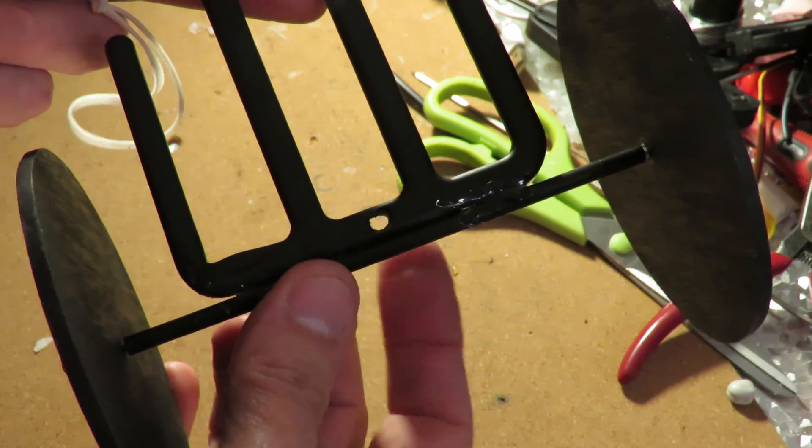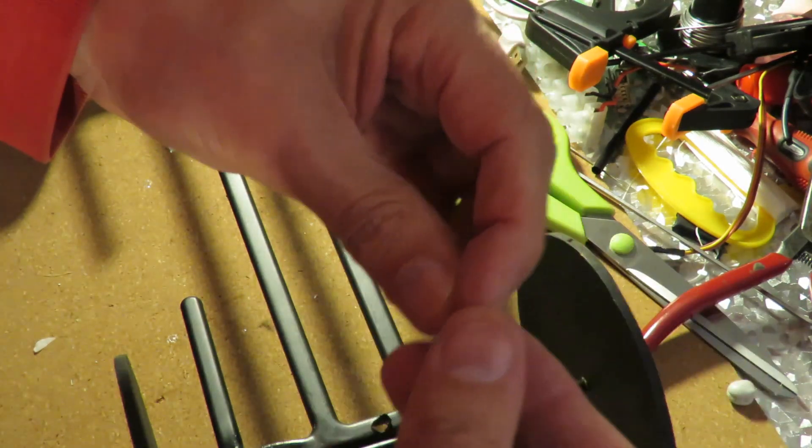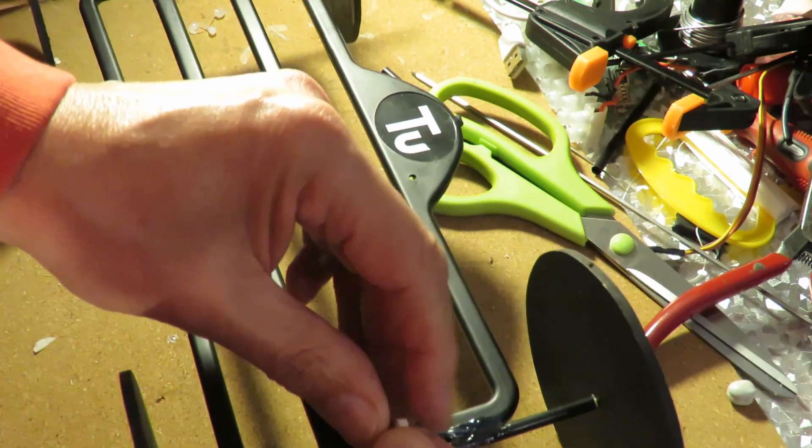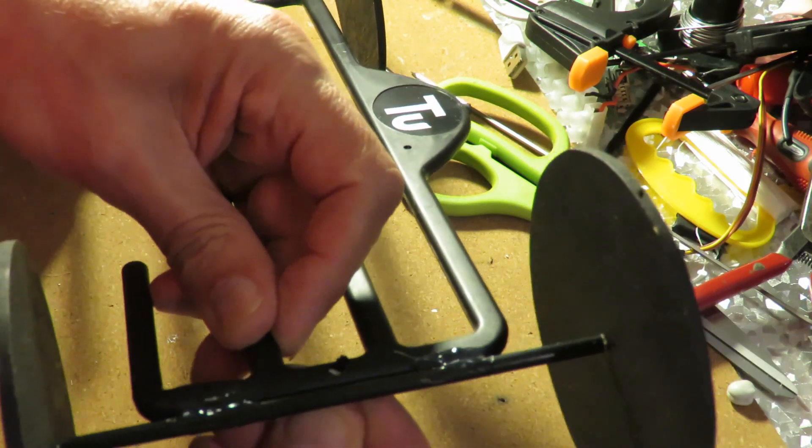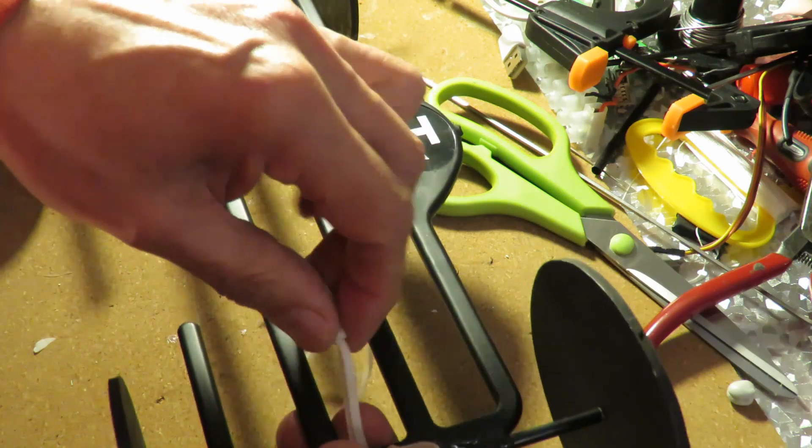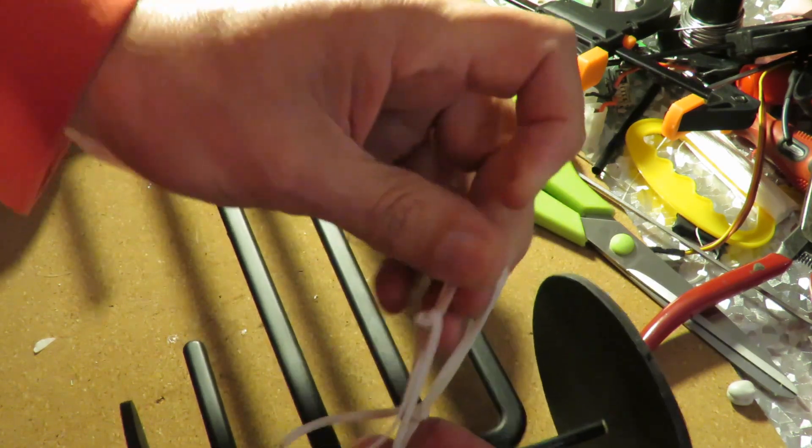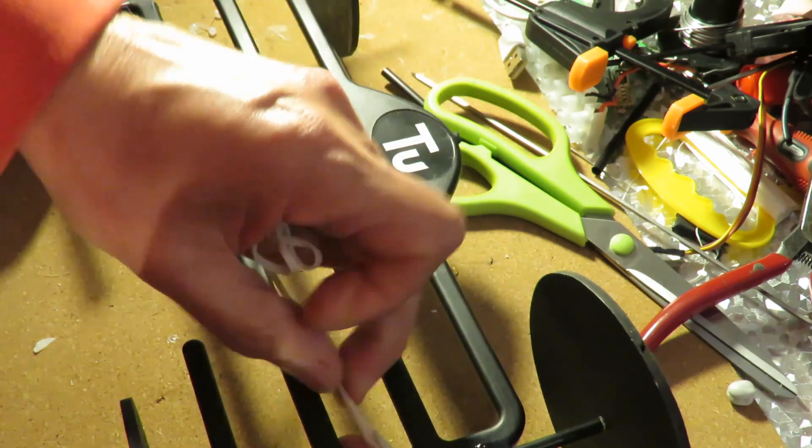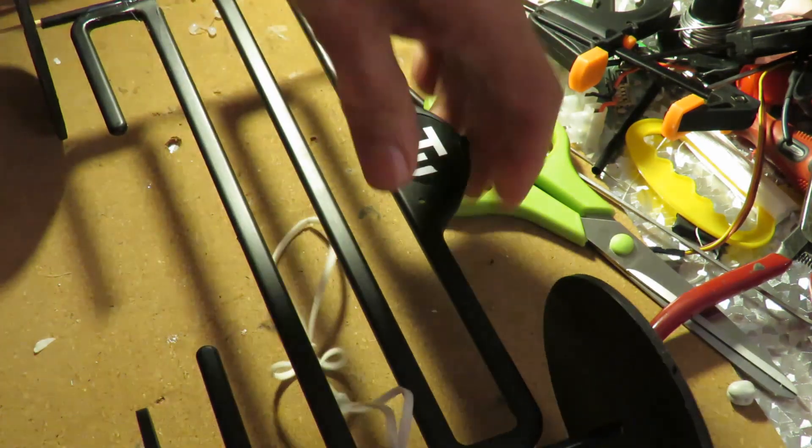There we go, melted a hole through. So we should be able to push the rubber band through the hole. I might need to, oh no, that's it, that's through. Then push the rest of it through that loop. So that's alright on that end.